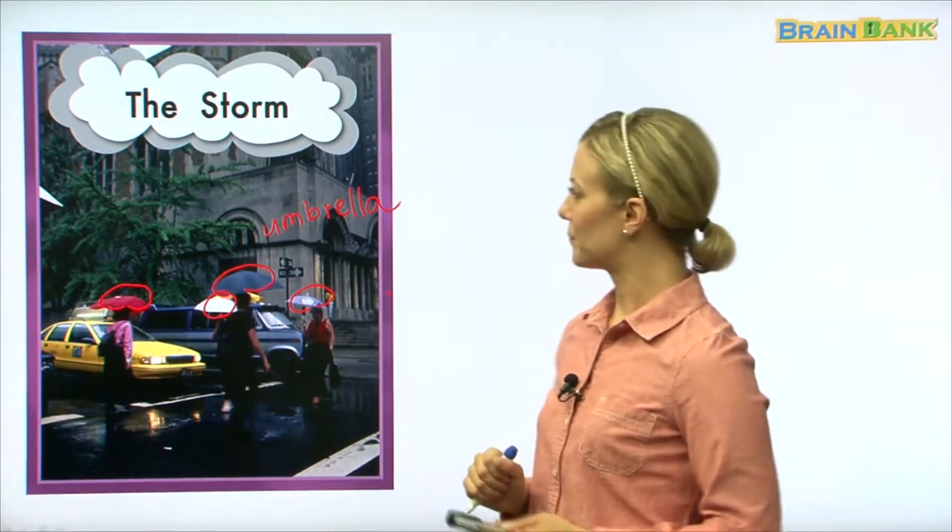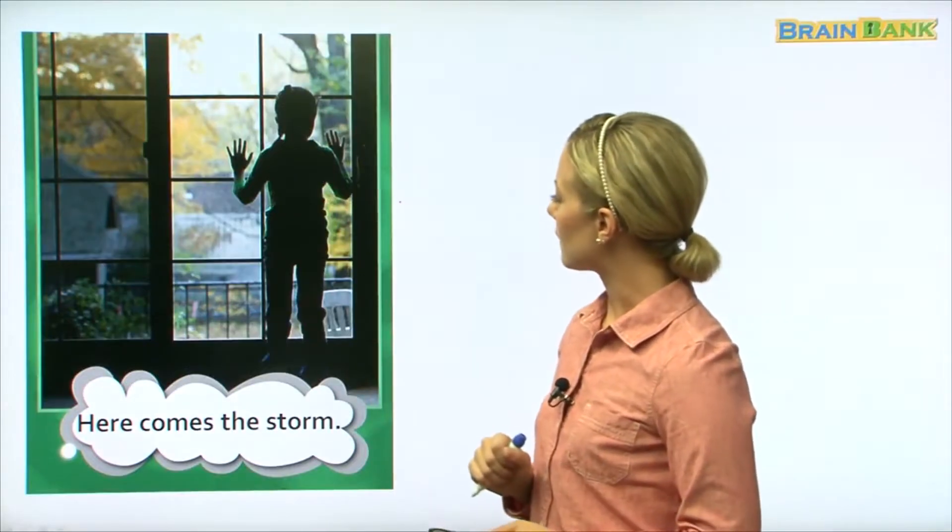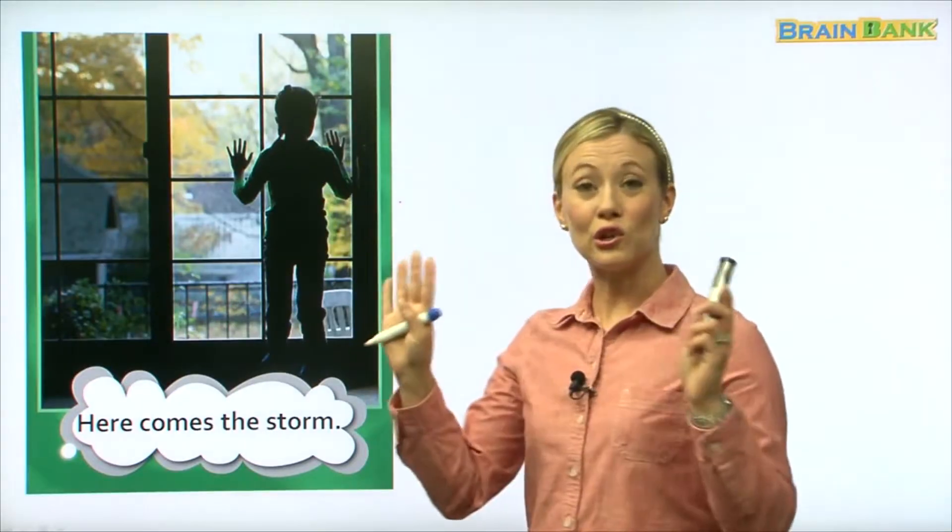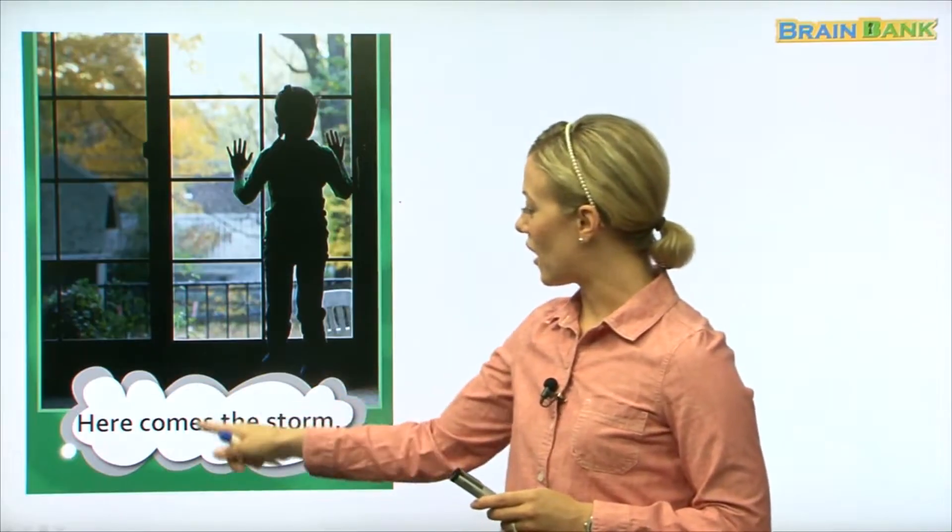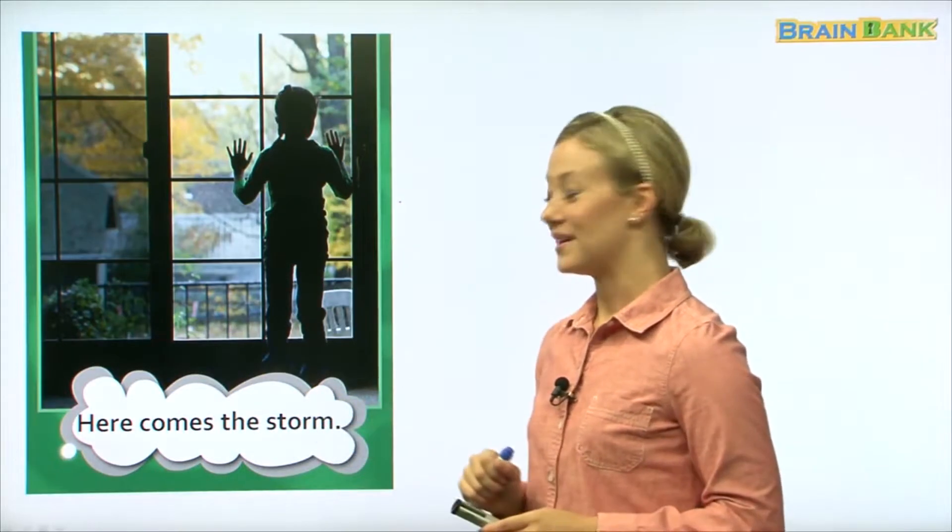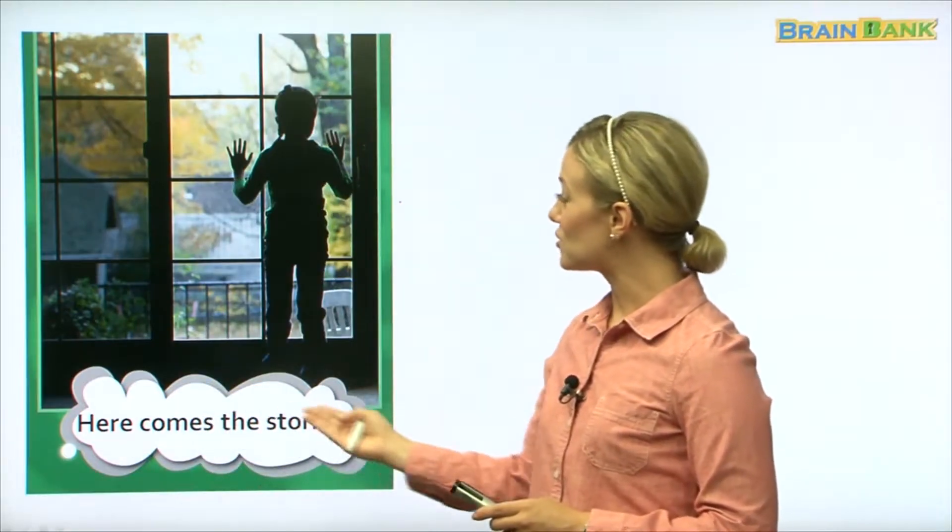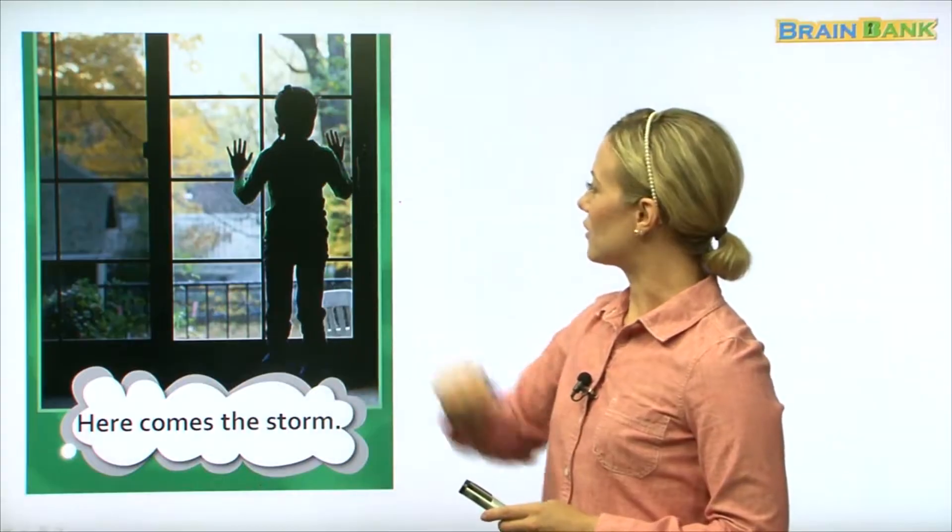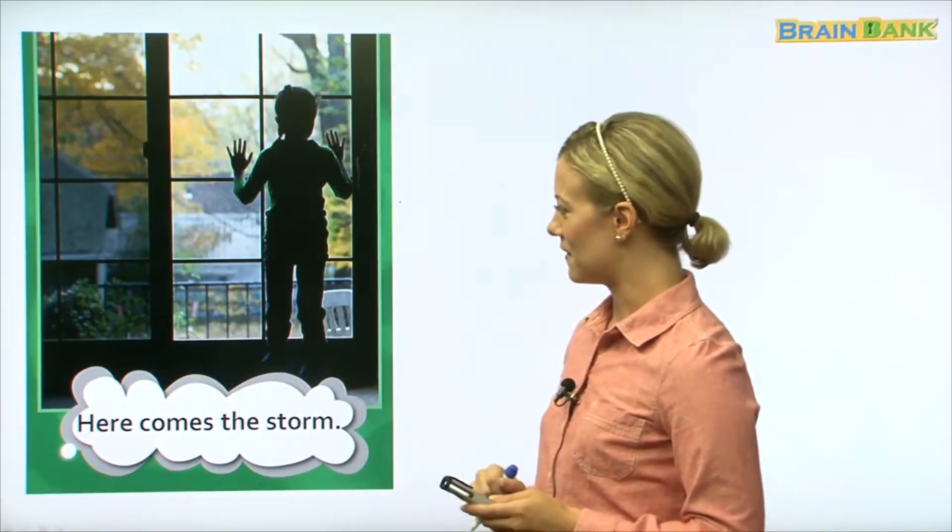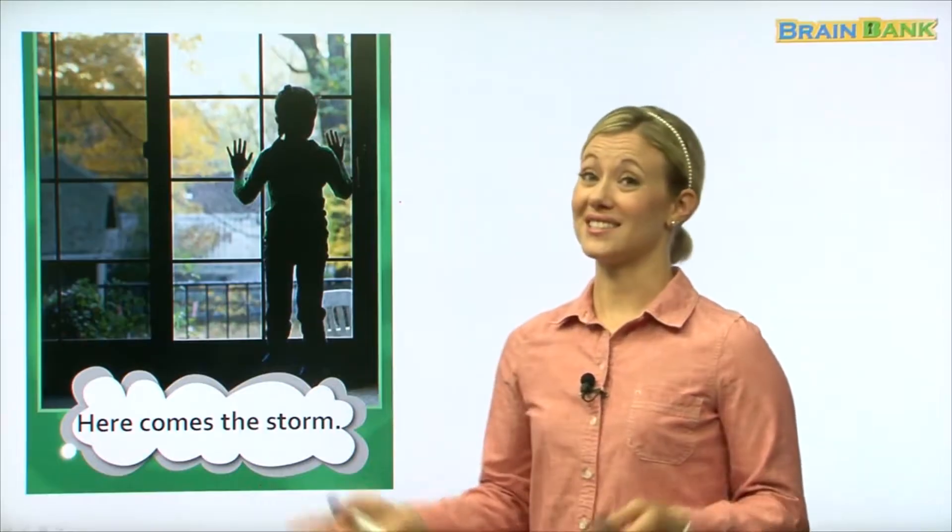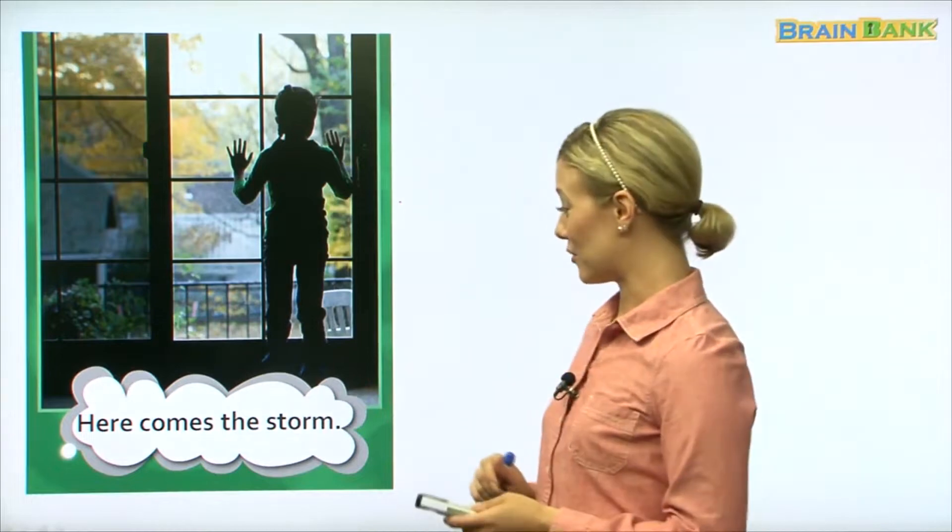Okay, so here we have a little girl and she's looking out the window at the storm. 'Here comes the storm.' Let's read it all together: 'Here comes the storm.' The little girl is waiting for the storm to arrive. Most children want to stay indoors when a storm comes. They don't want to go out and play in the rain.